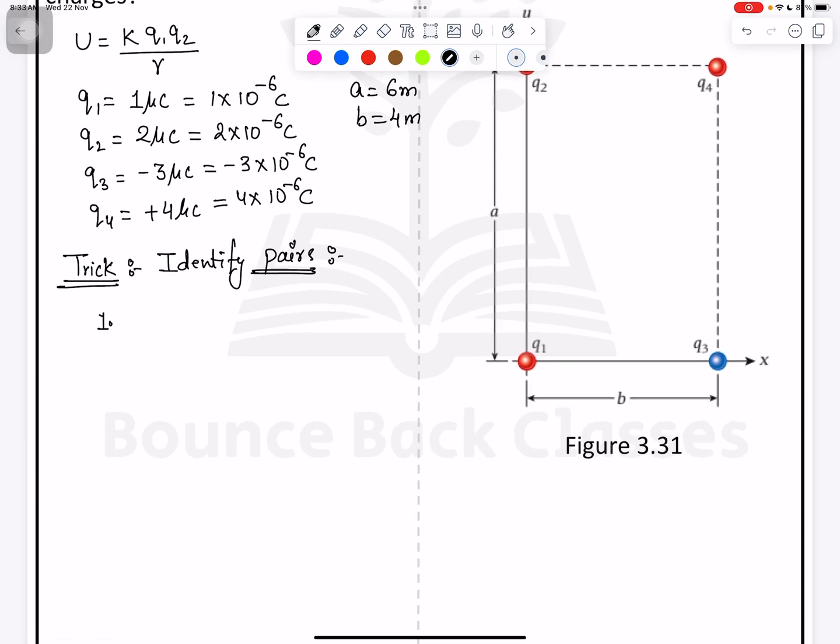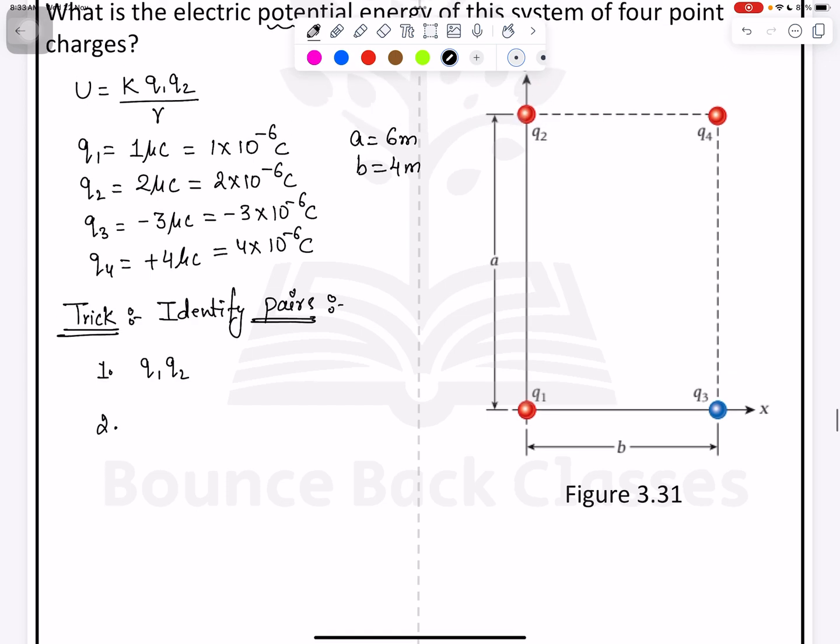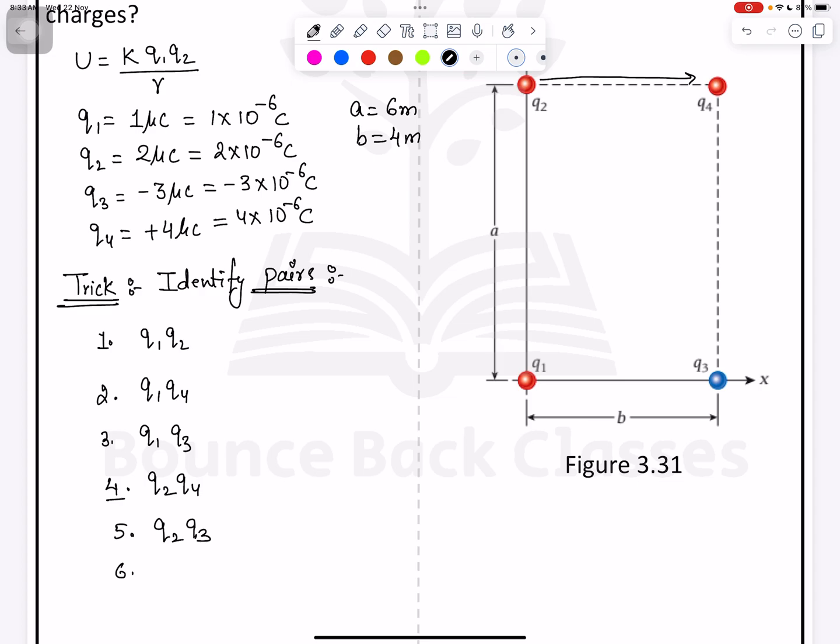The first pair, can I say Q1 Q2? Second pair, Q1 and Q4. Third pair, Q1 and Q3. Just tell me, is this the only pair? No, we have other pairs also. The fourth pair is Q2 and Q4. Fifth pair is Q2 and Q3. And sixth pair, which can be the last pair, Q4 and Q3. If you understand all the pairing, is there any other possible? No.